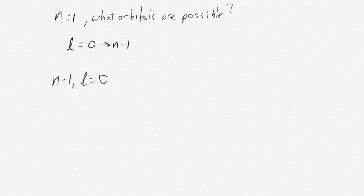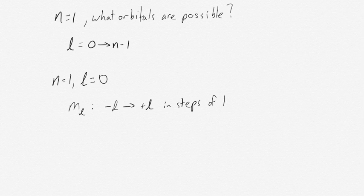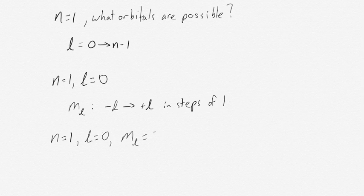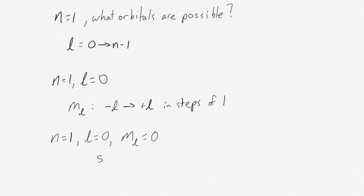Now we decide what possible values of ml we have. ml is based on l, ranging from minus l to plus l in steps of 1. Since our l value is 0, ml can only range from minus 0 to plus 0, so the only value of ml possible is 0. Our quantum numbers are therefore n equals 1, l equals 0, and ml equals 0. The l equals 0 subshell is called the s subshell, and there is only one possible orientation in space, meaning we have a single orbital within the s subshell within the n equals 1 shell.